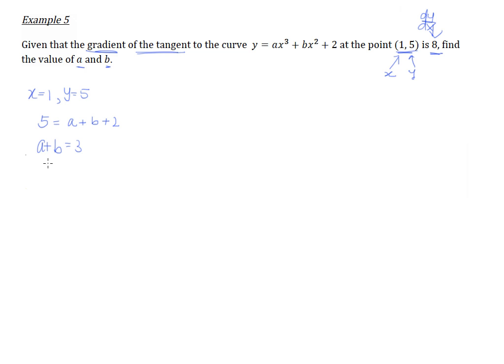So, naturally, we understand that we cannot solve this. We cannot solve for a, the value for a, the value for b. We need help. We need another equation so that we can do simultaneously. So, the other equation has to come from the fact that the gradient is 8 at this point. So, since we know that the gradient is 8, it will be a wonderful idea if we know what is the gradient function.